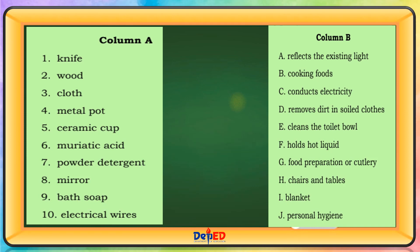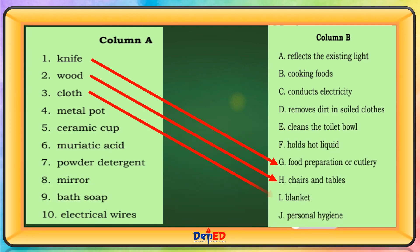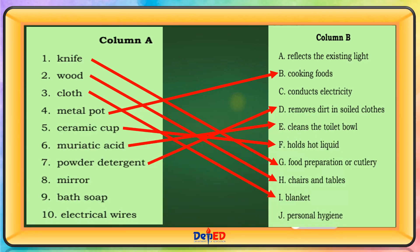Knife: Letter G — Food Preparation or Cutlery. Wood: Letter H — Chairs and Tables. Cloth: Letter I — Blanket. Metal Pot: Letter B — Cooking Foods. Ceramic Cup: Letter F — Holds Hot Liquid. Muriatic Acid: Letter B — Cleanse the toilet bowl. Powder Detergent: Letter D — Removes dirt in soiled clothes. Mirror: Letter A — Reflects the existing light. Bath Soap: Letter J — Personal Hygiene. Electrical Wires: Letter C — Conducts Electricity.